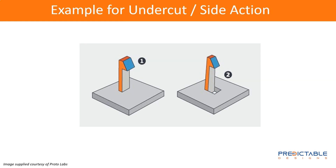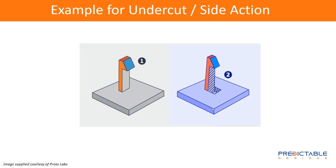Instead of using side actions, you can design to eliminate the undercut. One easy way is by putting a slot underneath the overhang. Now the bottom part of the mold has a metal section that comes up through this hole and fills in the gap, preventing that area from filling with plastic — without needing a side action. The slot is what's really key to making this injection moldable without side actions.